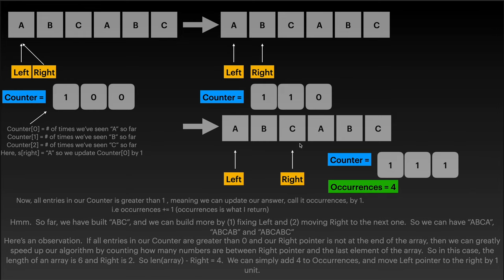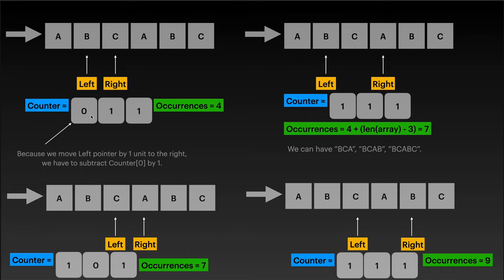That's the trick to this problem: when all entries are greater than zero, you calculate how many valid substrings you can form — it's just the length of the array minus the right pointer's position. So that gives four. We move the left pointer to the right and decrement by one. Since not all entries in the counter array are greater than zero, we move the right pointer to the right. Now all entries are greater than zero again, so we do the same thing: six minus three is three, and four plus three is seven.